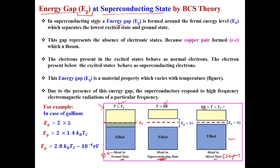In the superconducting state, an energy gap is formed around the Fermi energy level EF, which separates the lowest excited state and the ground state. For a simple metal we know the conduction band and valence band overlap with a Fermi energy level. But in the superconducting state, an energy gap Eg is formed. This distance is Δ on each side, so the total gap Eg equals 2Δ. This gap separates the lowest excited state from the ground state.